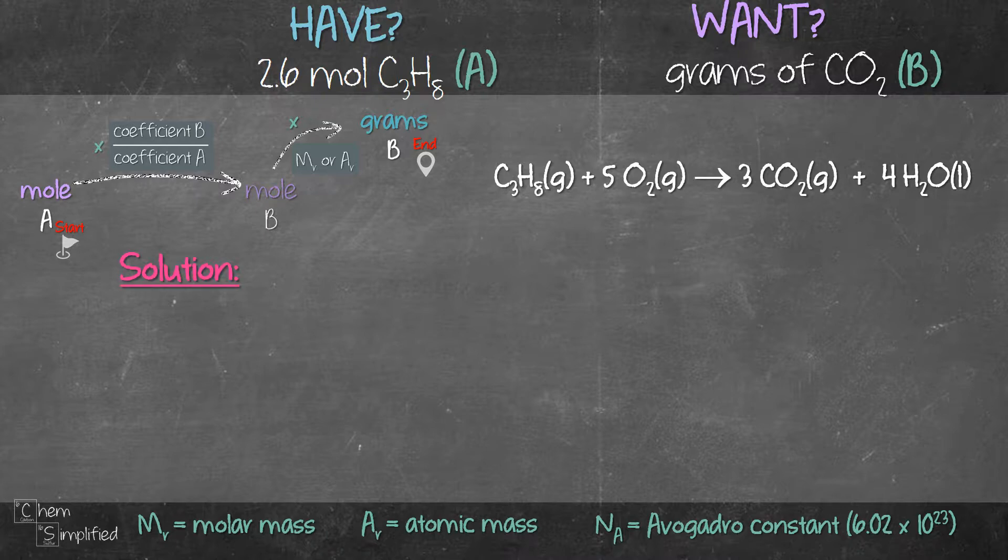In step 1, we will go from mole A to mole B and in step 2, we'll go from mole B to grams B. Step 1 is to multiply the mole, 2.6 mole, with the coefficient ratio B over A.